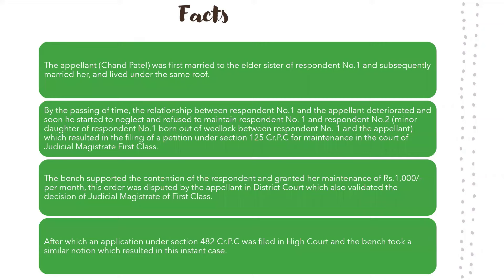The facts of this case are that the appellant Chand Patel was first married to the eldest of respondent one and subsequently married her and lived under the same roof. The appellant Chand Patel married Mushtaq B, the elder sister of the respondent. During the existence of his first wife, he decided to marry his wife's sister Bismillah Begum. With the consent of his first wife Mushtaq B, he married his wife's younger sister Bismillah Begum. It was stated by the respondent that they consummated the marriage and a child was born to them out of the wedlock.